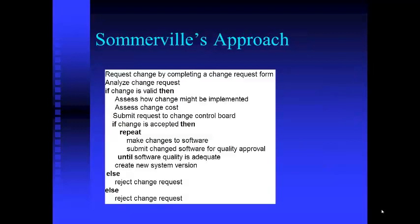Somerville has a humorous approach written out in pseudocode: request a change by completing a change request form, analyze the change request, if the change is valid then assess how it might be implemented, assess change cost, submit request to control board. If accepted, then repeat: make changes to the software, submit changed software for quality approval until software quality is adequate, then create a new system version. If the change is invalid, reject it. If the change doesn't get accepted, reject it.